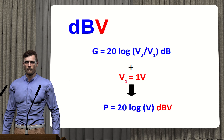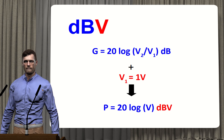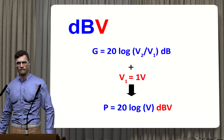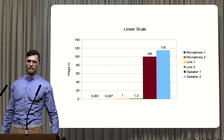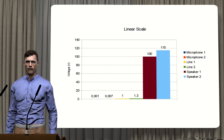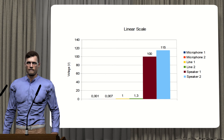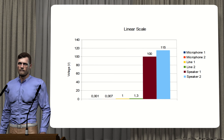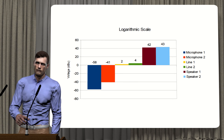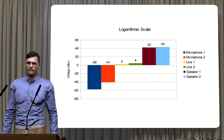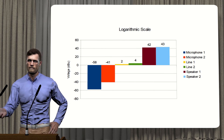It is also possible to find measurements expressed in dBV. In this case, the voltage reference is not 0.775 volts as for dBu, but a reference voltage of 1 volt, hence the subscript 'V'. Now let's look at another advantage of decibels. Suppose we have 6 signals from an audio system: 1 mV and 7 mV from microphones, 1 V and 1.3 V from lines, and 100 V and 115 V at the speakers. On a linear scale, it is impossible to adequately compare the smallest signals. Using a logarithmic scale with dBu, the data are much easier to compare, allowing adequate visualization of very small and very large values simultaneously.